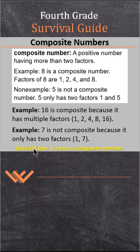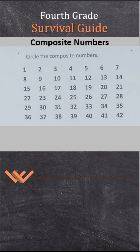Special case: 1 is not a composite number either because it only has itself as a factor. Remember, a composite number is not a prime number because it has more than one factor pair.